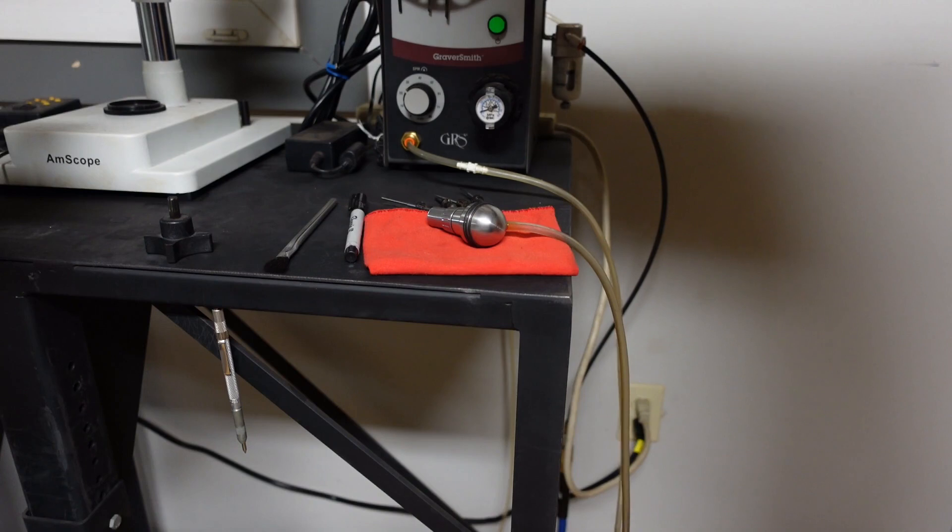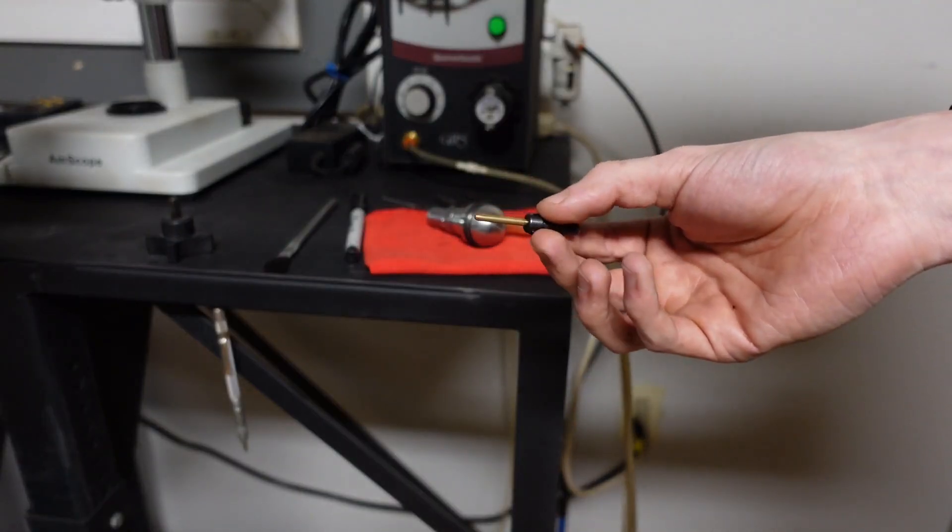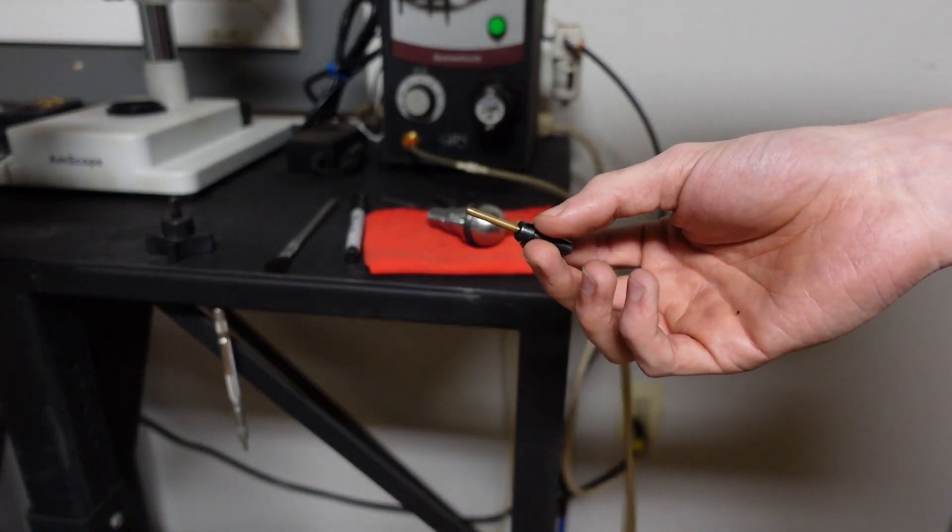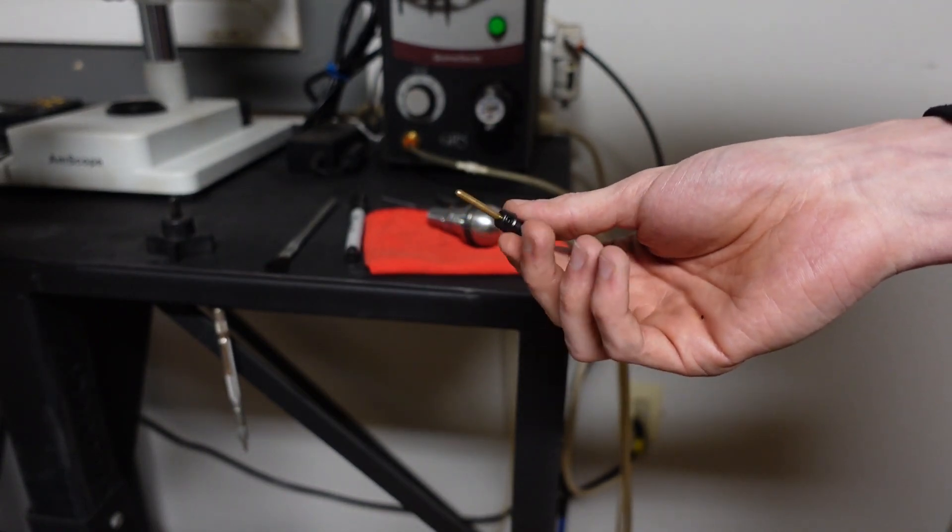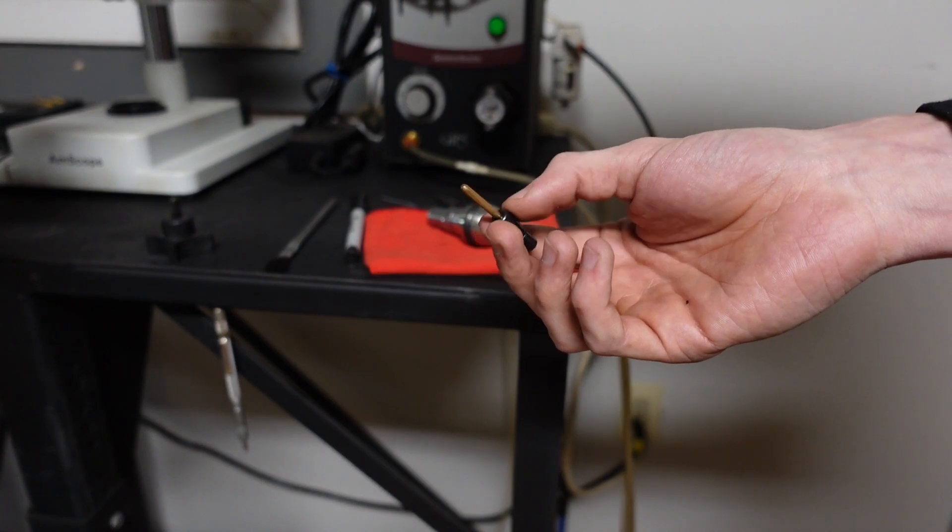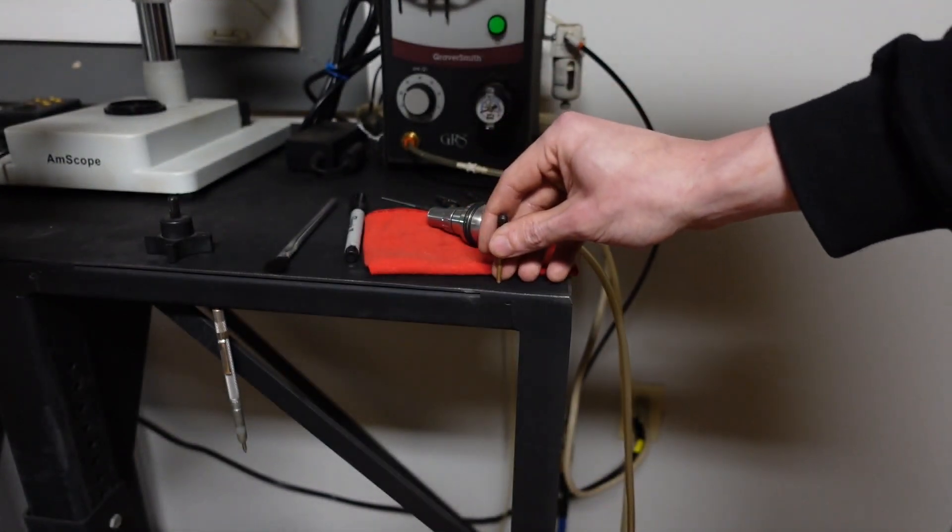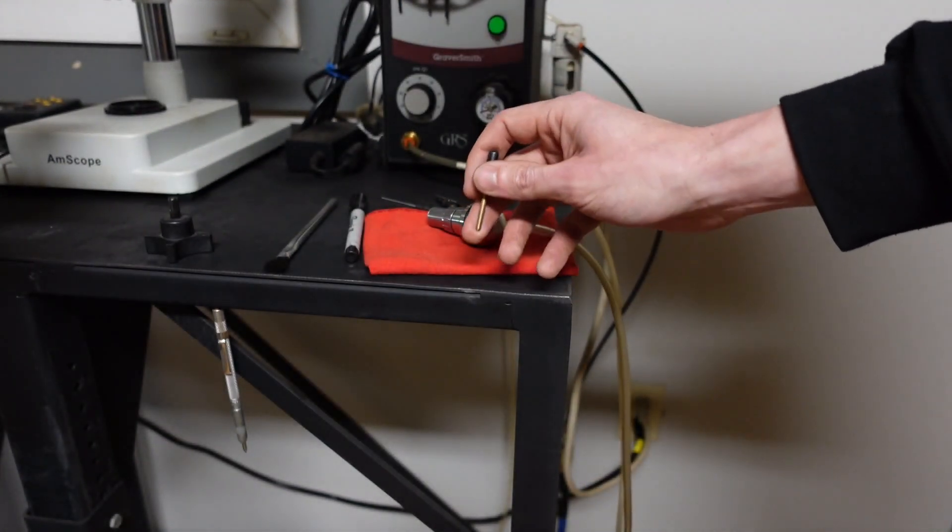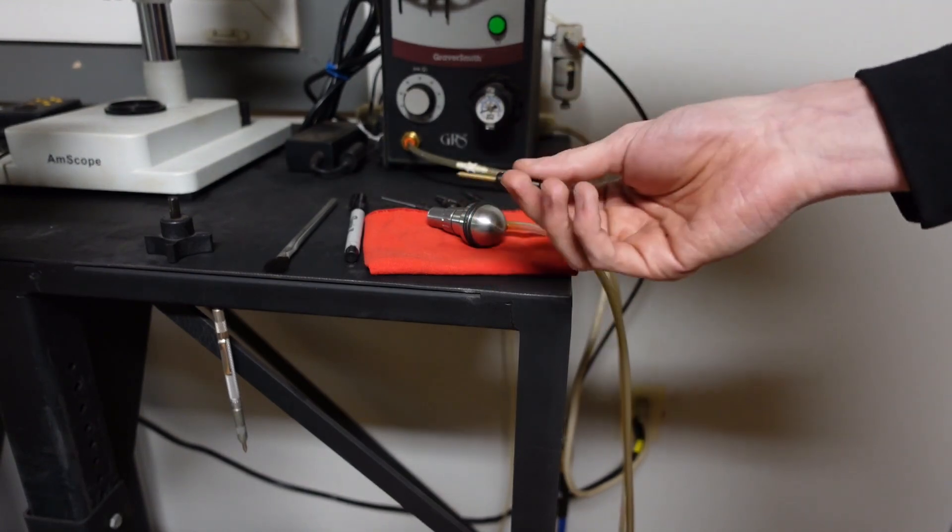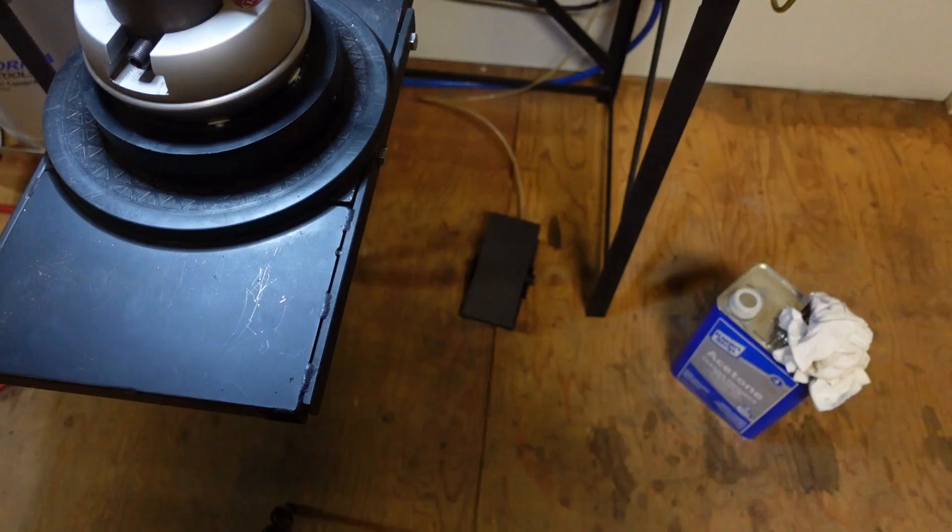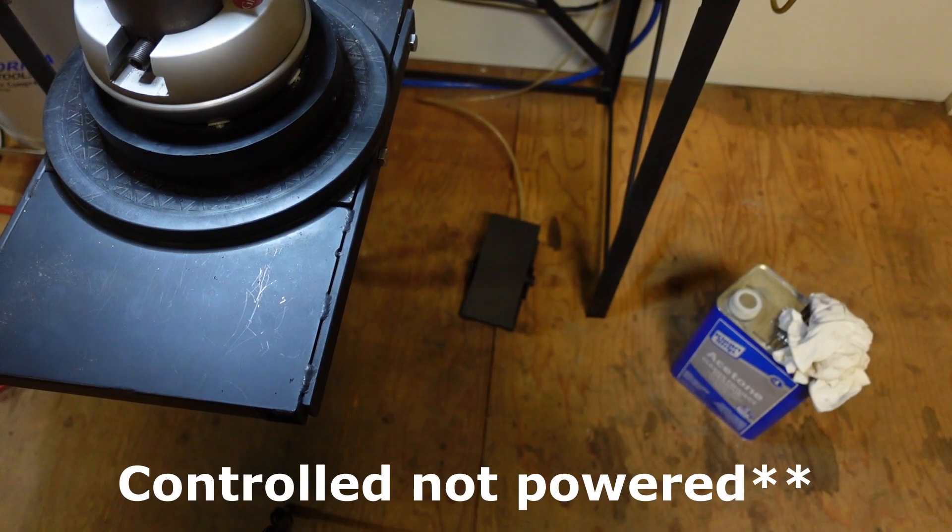Some other tools that you might find come in handy: this is a brass punch that I use for inlaying silver and gold. You want to use something like brass because it's softer than the steel, so if you get on the steel you won't leave marks on it, but it's hard enough to press gold and silver into the steel. The engraving machine is powered by foot pedal.